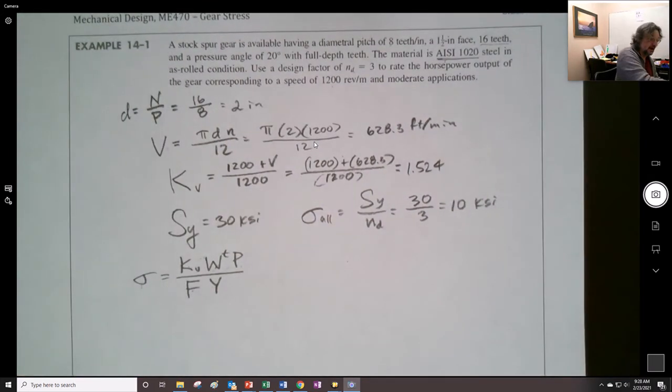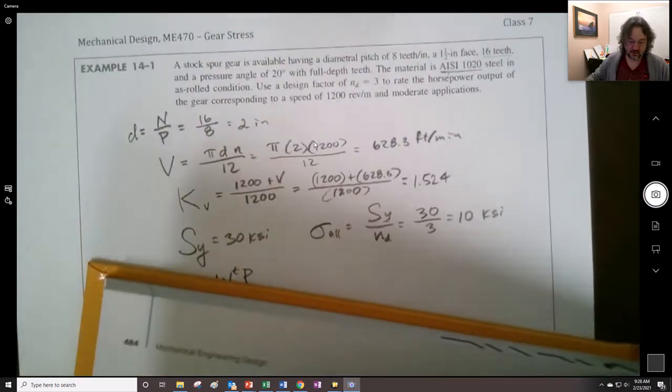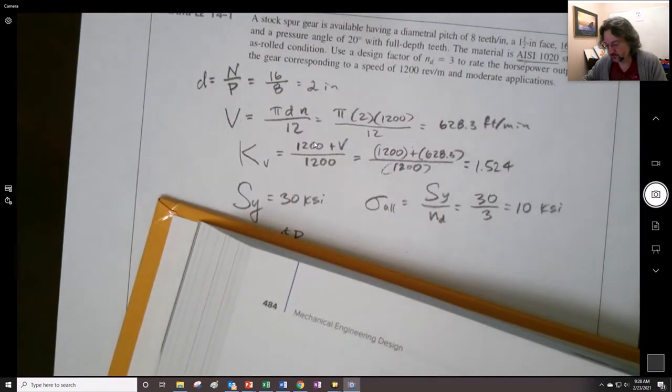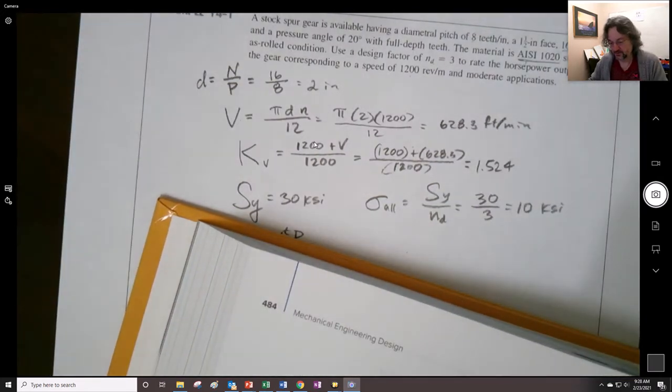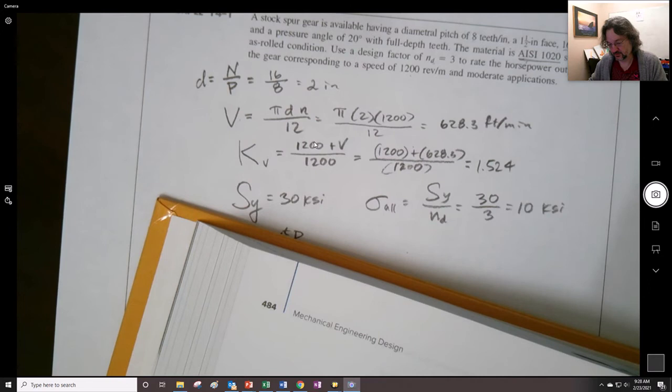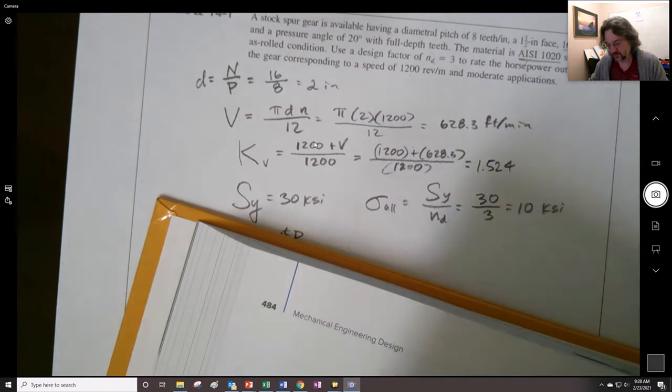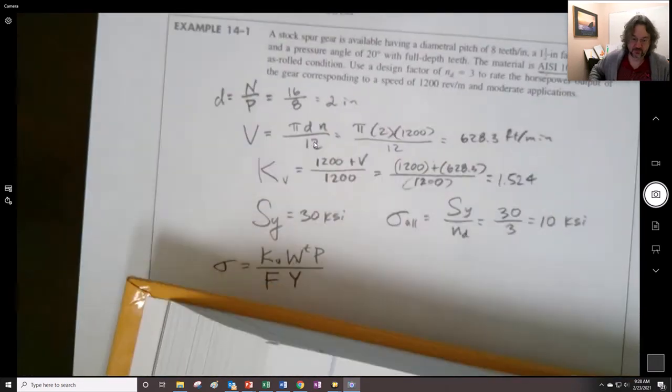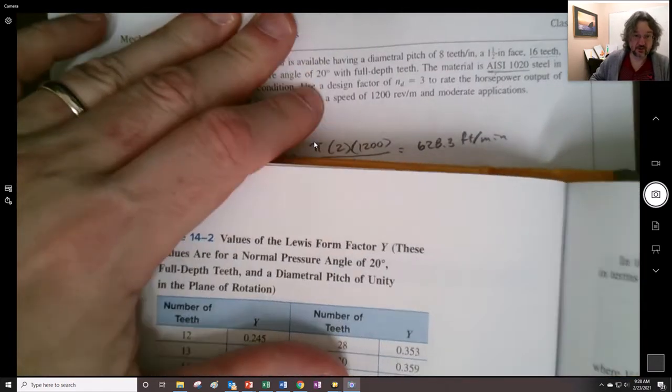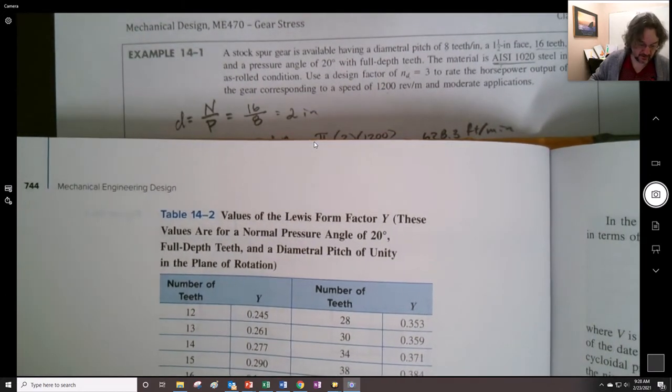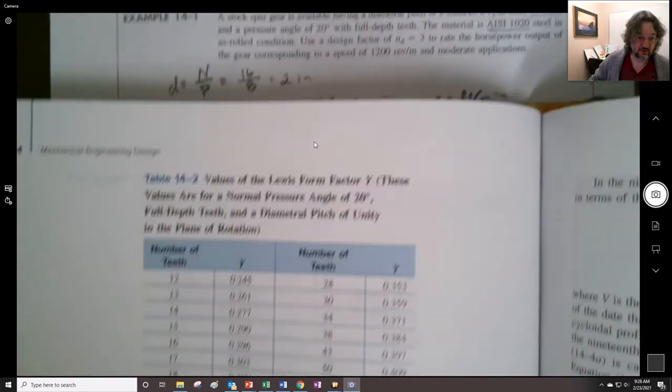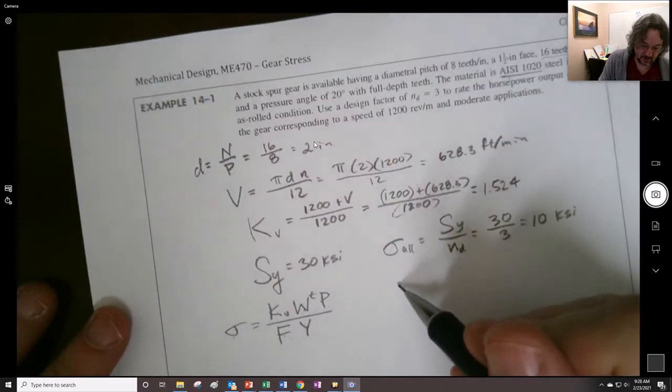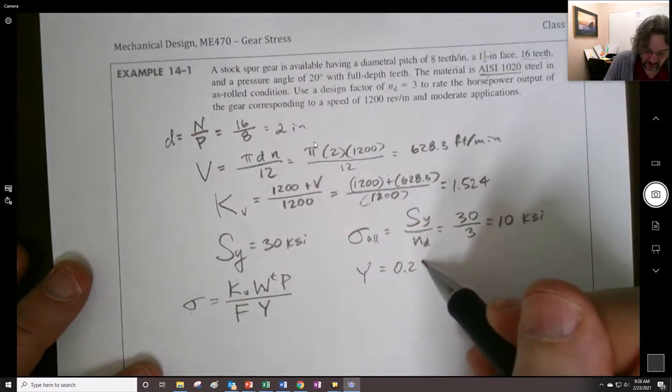So what is the Y? Well, that's going to be coming out of a table. And that table in chapter 14. Should have just marked this out. Right here. Talks amongst yourselves. Right here. So we were told that there were 16 teeth. So we find we have a Y from table 14.2 of 0.296. So Y is equal to 0.296.